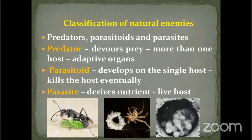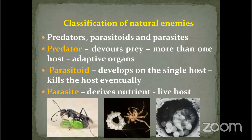For example, a head louse present on your head is just a parasite — it obtains nutrition from you but is not going to kill you. Similarly, in case of natural enemies, a mantispid fly grub belonging to Mantispidae derives nutrition from the egg of a spider but never kills the embryo developing within the spider. That is why it is named a parasite.